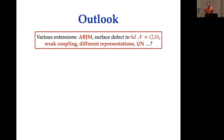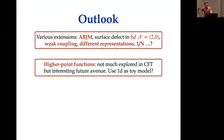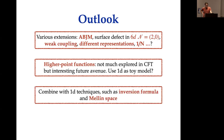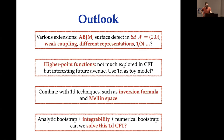For the outlook: we can extend these techniques to other theories such as ABJM — where results are available at tree level — or possibly a surface defect in the (2,0) theory. In the same setup, one could study different representations for the Wilson line or 1/N corrections. Higher-point functions, not well-explored in higher dimensions, could also be studied using this simplified 1D setup as a toy model. Finally, there is the challenge of combining analytic bootstrap, integrability, and numerical bootstrap to fully solve this 1DCFT.